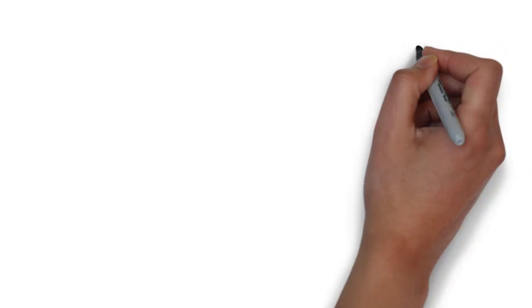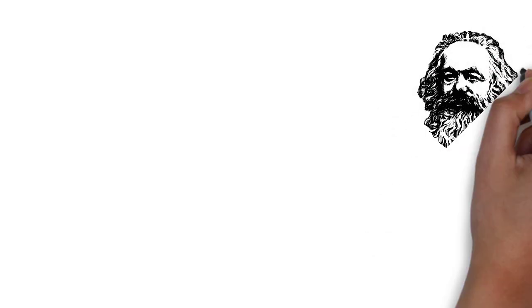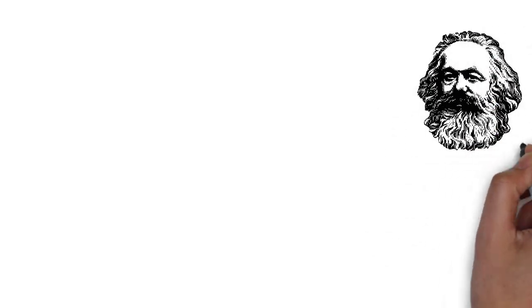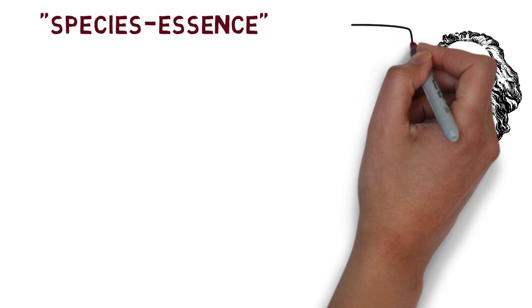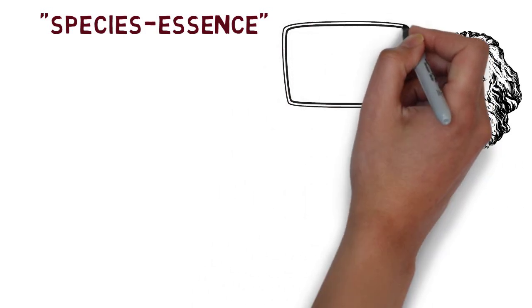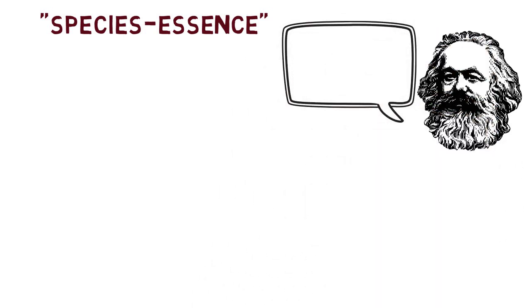Marx believed that society needed a better means of distributing wealth, but also a better way of tapping into our full human potential, or what Marx called our species essence. According to Marx, what we do is directly connected to who we are. It defines us and lets us express our full humanness.